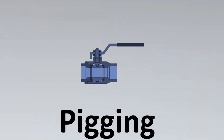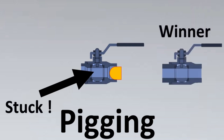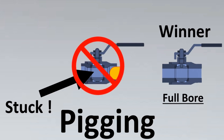So how does pigging relate to full bore vs. reduced bore? If you use a reduced bore valve and insert the pig, the pig is going to get stuck inside the valve — because the pig size matches the line ID, but the reduced bore has a smaller opening. Whereas with a full bore valve, the entire pig can pass through. So for pigging applications, full bore valves are required and reduced bore cannot be used.